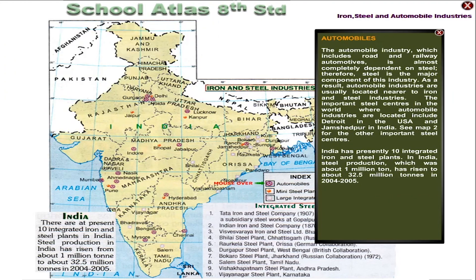The automobile industry, which includes road and railway automotives, is almost completely dependent on steel. Therefore, steel is the major component of this industry. As a result, automobile industries are usually located near iron and steel industries. The important steel centres where automobile industries are located include Detroit in the USA and Jamshedpur in India.